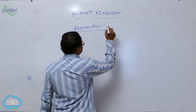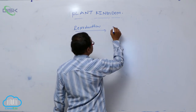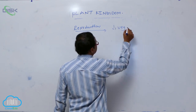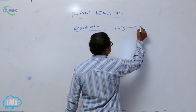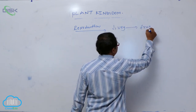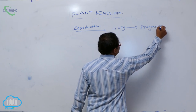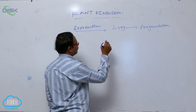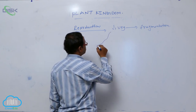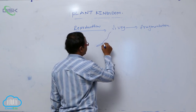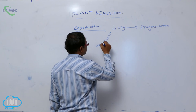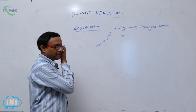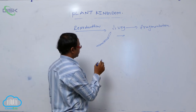Reproduction takes place by three types. First is vegetative reproduction, which takes place by fragmentation. Fragmentation means the filament is divided into a number of fragments, and then each fragment produces a new plant.